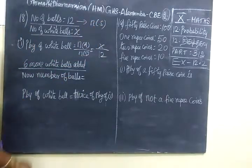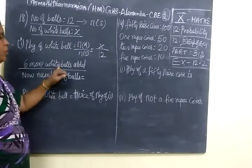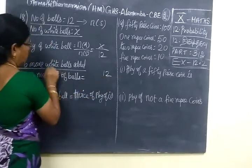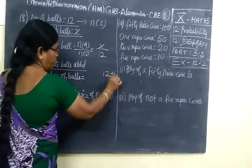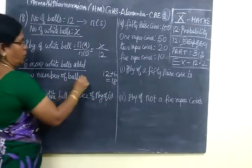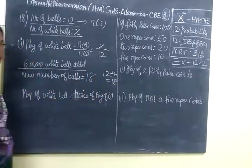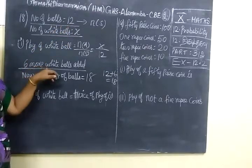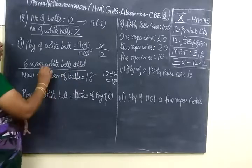Now we are going to see six more white balls added. Already we have 12 balls. Six more white balls added means 12 plus 6 is 18 balls. So now the total number of balls equal to 18. So in the bag, first 12 balls, now six more balls added, that too white balls.